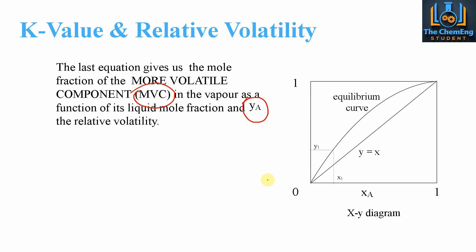If we plot this equation on an x-y diagram, the axes go from 0 to 1 — completely saturated liquid to completely saturated vapor. The 45-degree operating line represents where y equals x. The equilibrium curve sits above this line, similar to the curves seen in the McCabe-Thiele method for solving distillation. We exploit the relationship between the equilibrium curve and the operating line. If we know x1, we draw up to the equilibrium curve and across to get y1.